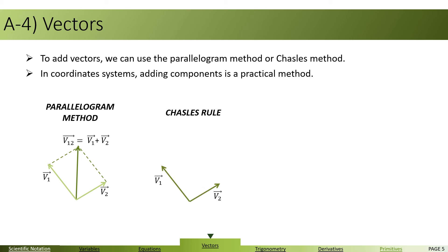Chasles method or rule is simply translating one of the vectors to the tip of the other vector. Here, we translate V2 to the tip of V1. Then,